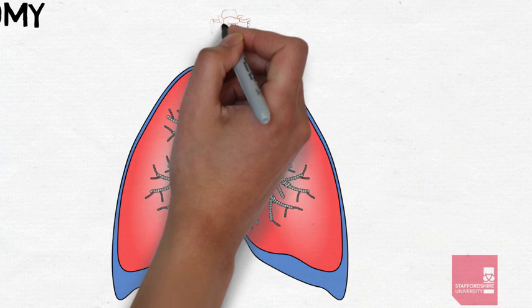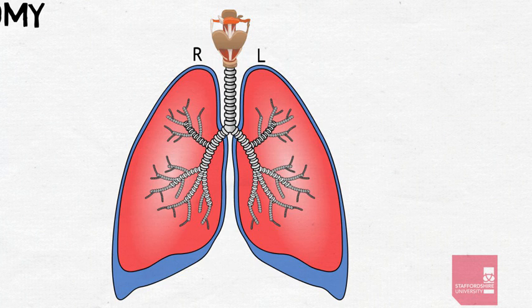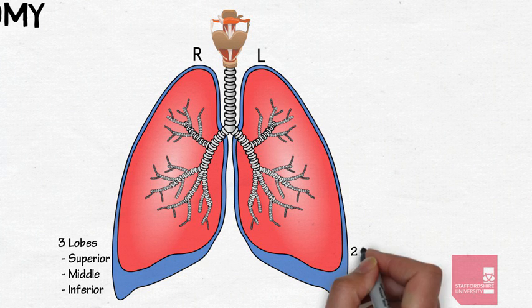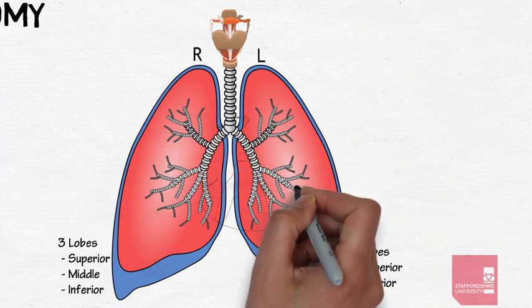The lungs themselves can be split into left and right lungs and are each divided into lobes. The right lung consists of three lobes: superior, middle and inferior. And the left lung consists of only two lobes as it's smaller due to the relative position of the heart within the chest cavity.